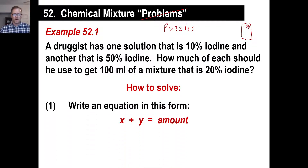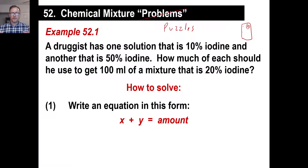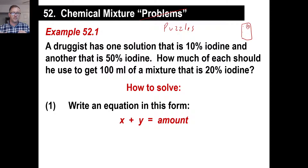Here are the steps. Number one: write an equation in this form — x plus y equals amount. Let me explain that. You're mixing two solutions together. He has one solution, he has another solution, and he's mixing them together to get 100 milliliters. That's your first equation. If two boys got on a scale and the scale read 100 pounds, you'd write x plus y equals 100. Both of them together equal 100 pounds.